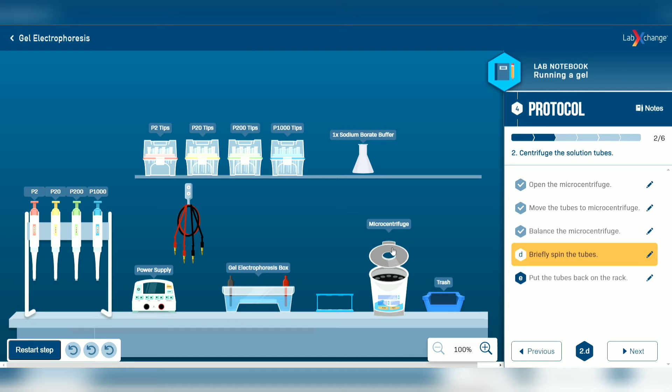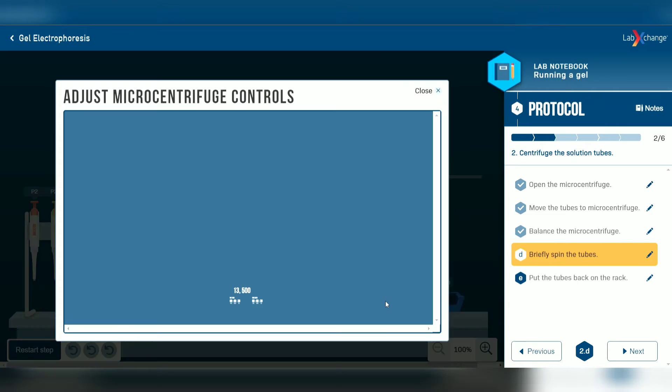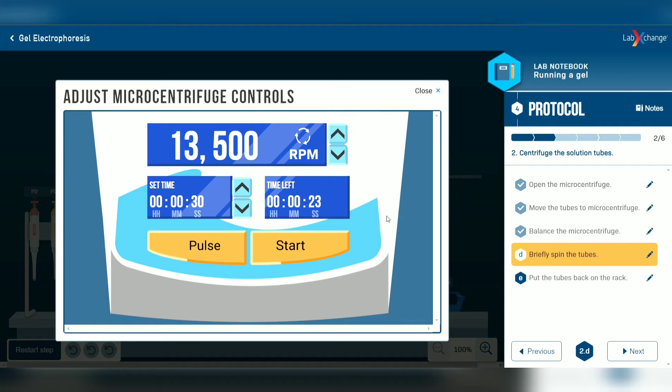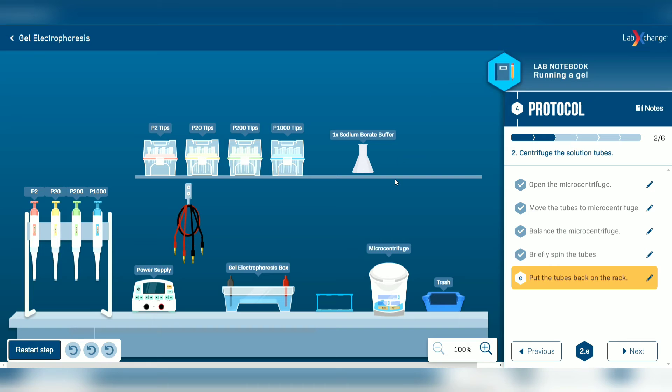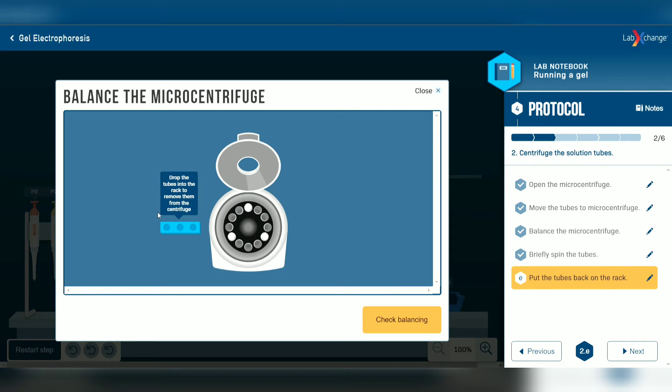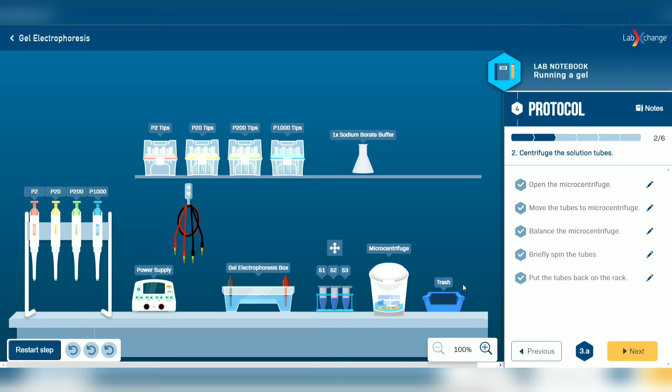Close the microcentrifuge and briefly spin the tubes. Now open the microcentrifuge and put the tubes back to the rack. Close the microcentrifuge.